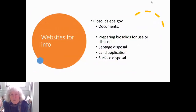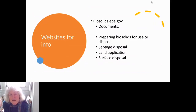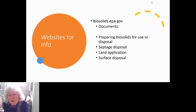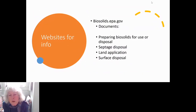EPA documents on the regulations including land application and surface disposal are available at the EPA biosolids website. One document is 'Preparing Biosolids for Use or Disposal,' which covers treatment processes, what these achieve in pathogen reduction and vector attraction reduction, and monitoring requirements. There's also a special document on septage disposal options, one on land application, and one on surface disposal — all available on the biosolids website.